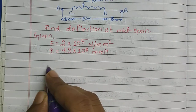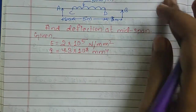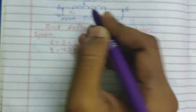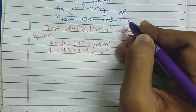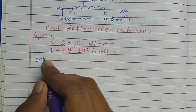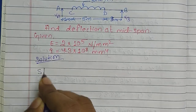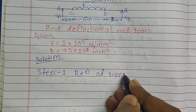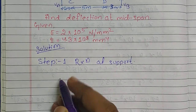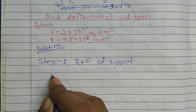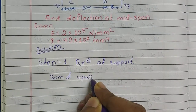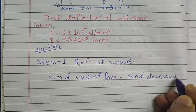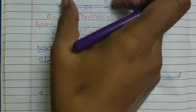Let's begin Step 1. Our very first step is to find the reaction at supports A and B. Let us suppose the reaction at support A is VA and the reaction at support B is VB. For the reaction at support, the sum of upward forces is equal to the sum of downward forces.